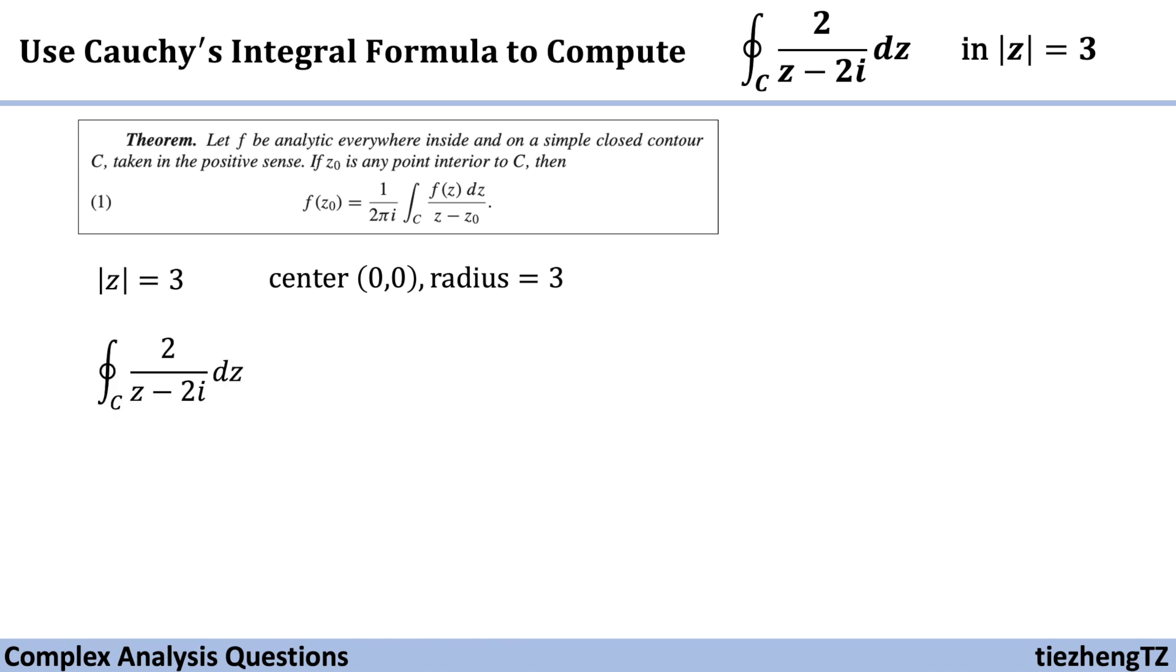Now let's take a look at this given equation, integral 2 over z minus 2i dz. Compared to the one in the theorem, we can make f(z) equal 2. And we know this is analytic inside this contour.